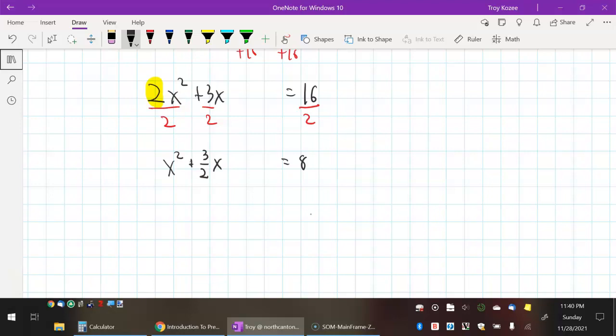And when you complete the square, you take this coefficient, you cut it in half, and you square it. And that's what you add to each side.